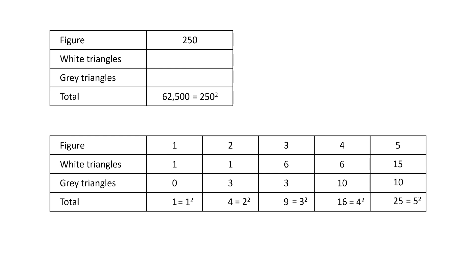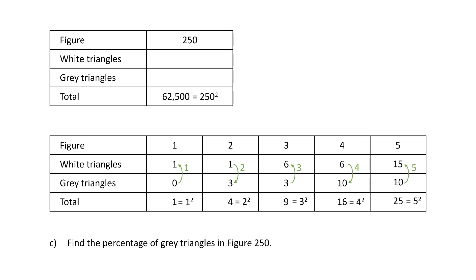Let's now solve the hardest part of the question, which is part C: find the percentage of gray triangles in figure 250. The percentage of gray triangles equals the number of gray triangles divided by the total number of triangles. We've already calculated the total, so it only remains to calculate the number of gray triangles. We saw that the difference between white and gray triangles exactly matched the figure number — in figure 1 the difference was 1, in figure 2 it was 2, and so on. So in figure 250, the absolute difference between white and gray triangles will be 250.